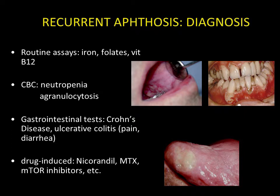The history-taking must also explore the medications taken by the patient, since some drugs, such as nicorandil or methotrexate, can induce aphthosis lesions.